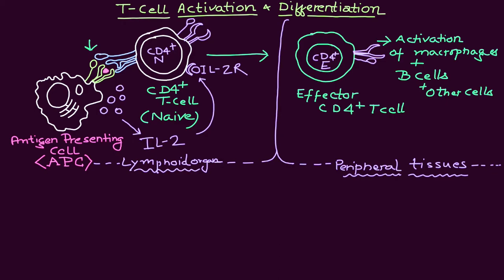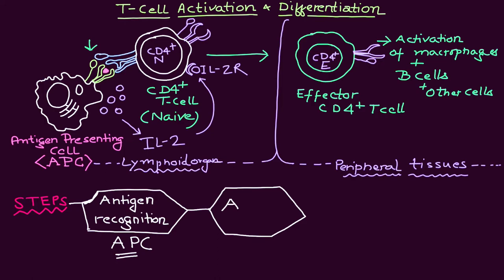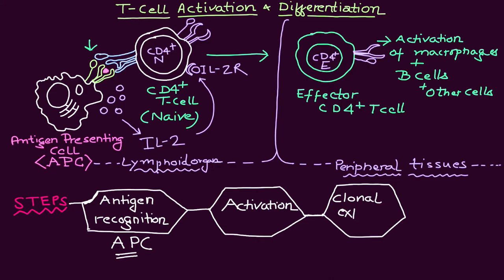Let's summarize all these steps. The first step is antigen recognition, where antigen-presenting cells present molecules to naive CD4-positive T cells. The second stage is activation of the naive T cell. Because of activation plus clonal expansion, you will have effector T cells.